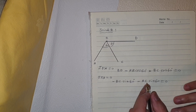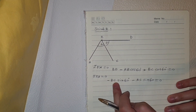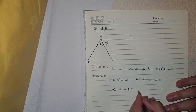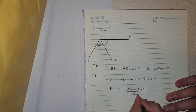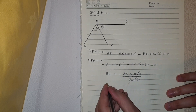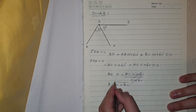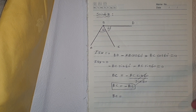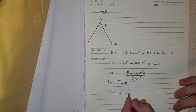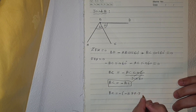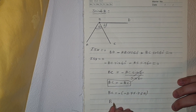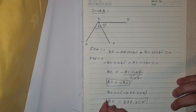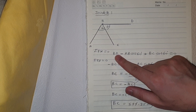Solving for BC: BC equals minus AB times sin60° divided by sin60°, so BC equals minus AB. Since AB equals minus 577.35 newtons, BC equals minus times minus 577.35, which is positive 577.35 newtons — BC is in tension.